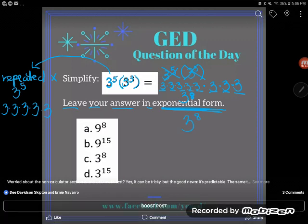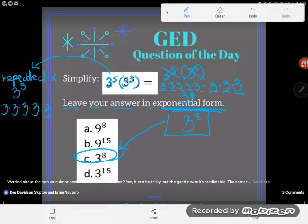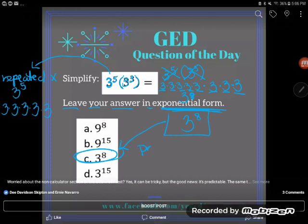And that is absolutely the answer here. 3 to the 8th power. So it'd be C. But just by doing it that long way, did you figure out the rule? What happened? What's the shortcut? What could I have done with those exponents to get to the same place?